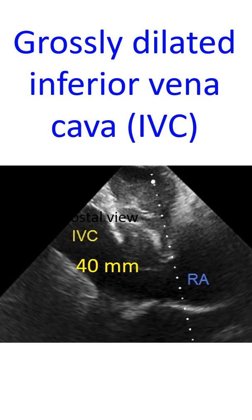Grossly dilated inferior vena cava on echocardiography from the subcostal view is seen in this image. The subcostal view with a tilt images the inferior vena cava draining into the right atrium. Here the IVC is grossly dilated with a diameter of 40 mm, indicating severe right heart failure. When IVC is dilated very much, it is customary to add 20 mmHg to the observed tricuspid regurgitation gradient while estimating the right ventricular systolic pressure.